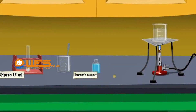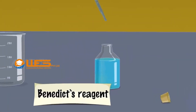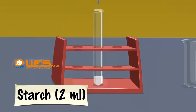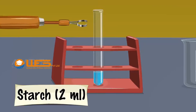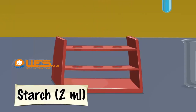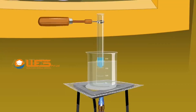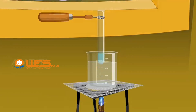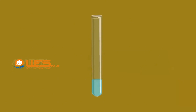Starch. Take 2 ml of Benedict's reagent in a dropper. Add it to 2 ml suspension of starch taken in a test tube. The colour of the solution turns blue. Remove the test tube from the rack using a test tube holder. Place it in a boiling water bath and heat for a few minutes. The colour remains the same. The test is negative, indicating that starch does not contain reducing sugar.